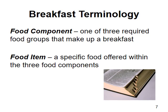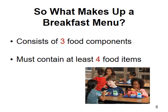A food component is one of the three required food groups that make up a breakfast. The three food components to be offered to all students at breakfast are fruits — or vegetables as a substitute — grains with optional meat-meat alternate items allowed, and fluid milk. A food item is a specific food offered within the three food components. An example would be four ounces of juice and a half a cup of pears, which are counted as two items even though they are from the same food component.